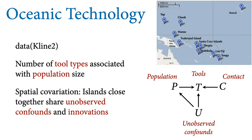Here's a revisit of the DAG we saw earlier. The outcome of interest is the number of tools — the complexity of the toolkit. These are historical toolkits, and we're interested in population as the treatment: what's the influence of population size on the equilibrium complexity of a toolkit? Previously we tried to deal with some spatial confounding using a binary-coded contact variable, and we acknowledged there were unobserved confounds influencing both population size and toolkit complexity that we were going to ignore. Now we're ready to deal with that.